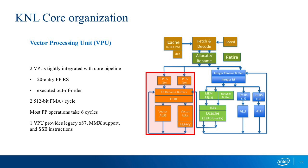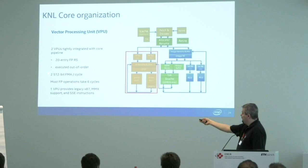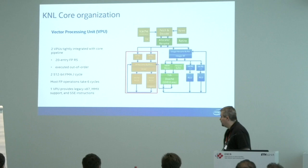The floating-point unit — there are two of them. We have 20 entries that we can execute out of order. We can complete two 512-bit FMAs per cycle. Most operations take something like six cycles in throughput. There's also x87, MMX, and SSE instruction support — but it's probably not wise to use them. x87 shouldn't be used anymore; we still support it but performance will be mediocre.